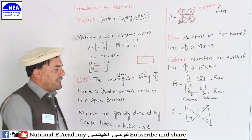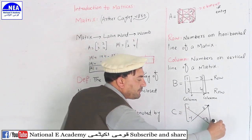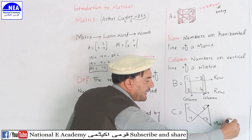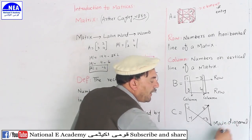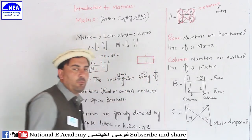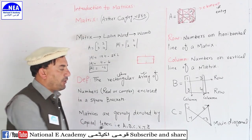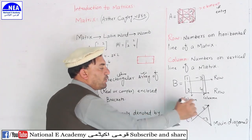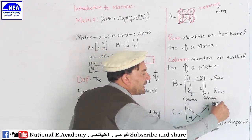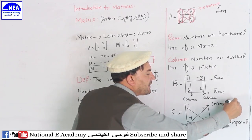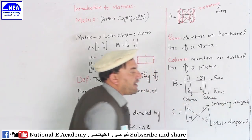Now, if we have elements like 1 and minus 3, this forms the main diagonal, also called the principal diagonal. And elements like 2 and 3 form the secondary diagonal.